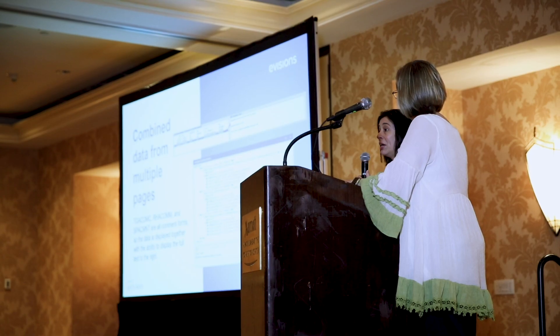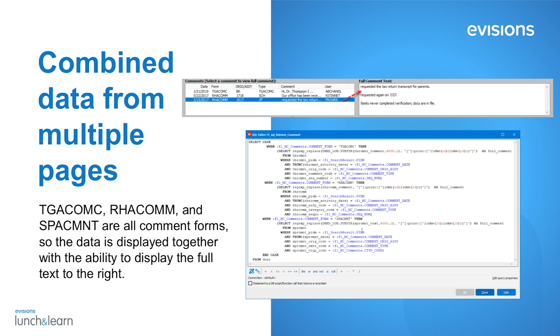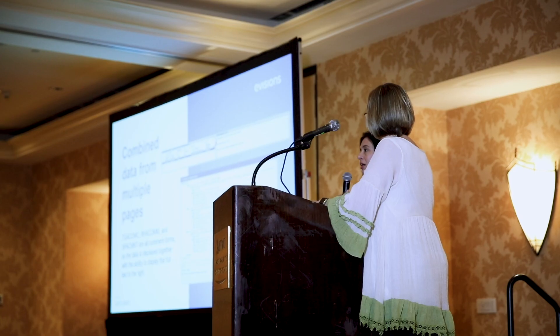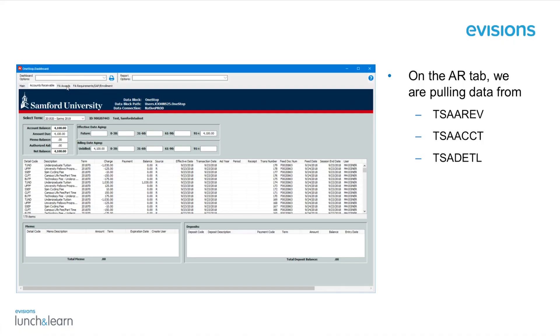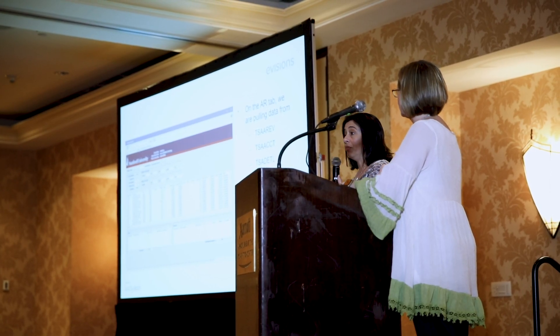To keep it concise, we combined several forms into one multi-column list box. That was a little bit of code showing where we pulled comments from three different comment screens in Banner into one multi-column list box so they can see all the comments in one place. This was a tabbed dashboard — on the first tab we had general information, and on the second tab we have account information so they can see their balance, memos, and deposits, all coming from three different Banner forms on this one form.